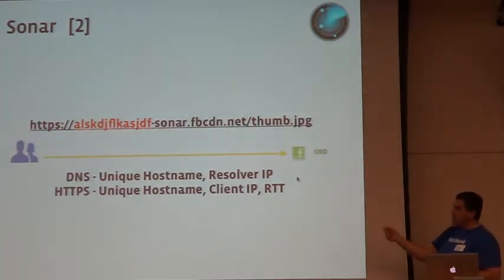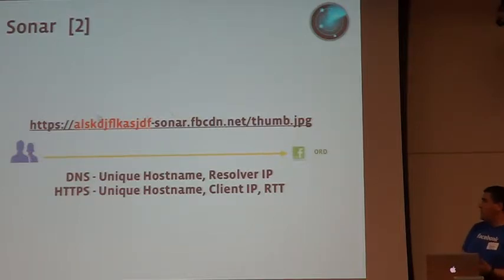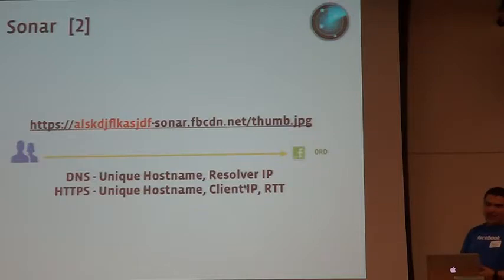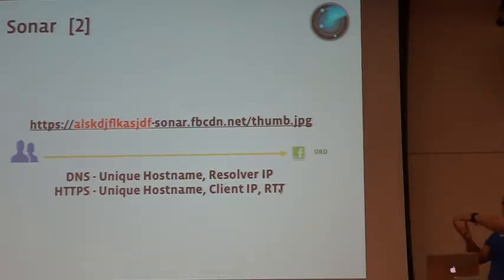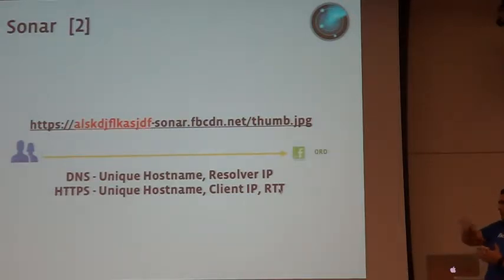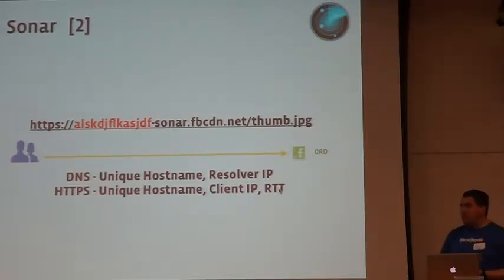Once you fetch the picture, we have all the information: the unique hostname to correlate the experiment, the client IP address from the fetch request, and the latency for each POP. After fetching all the pictures, the browser creates a JSON structure and sends it to us with the list of pictures and all the latency times. With more and more data, we can refine the routing. This is how we solve DNS routing across the board — and the results are amazing.